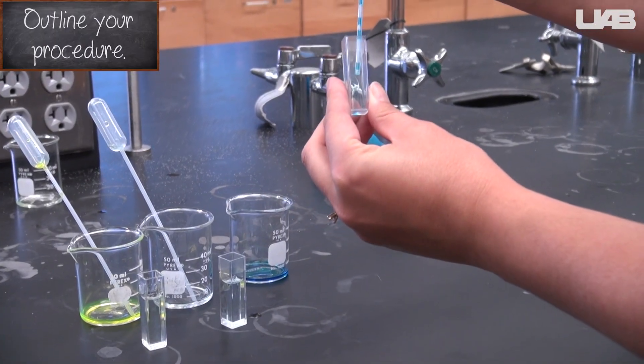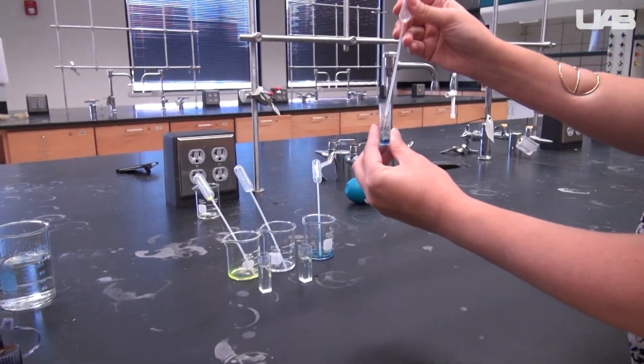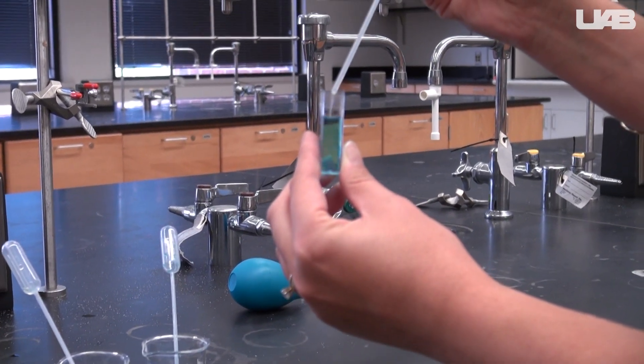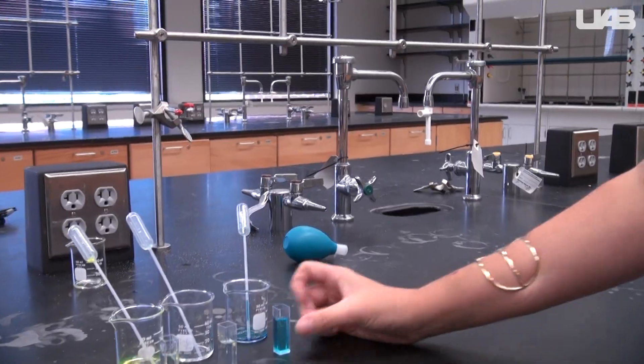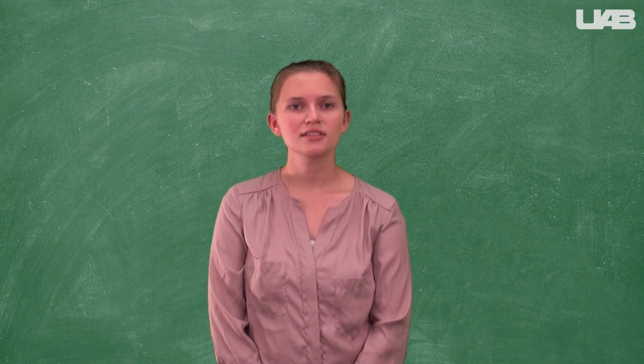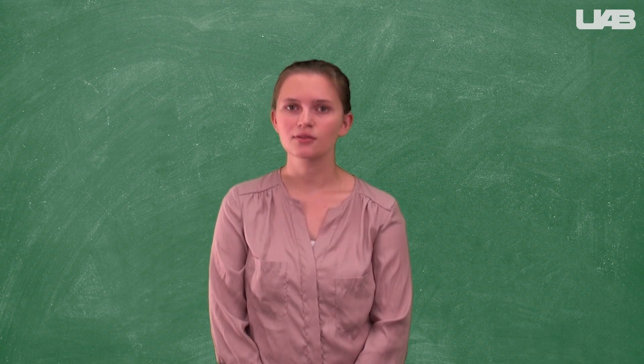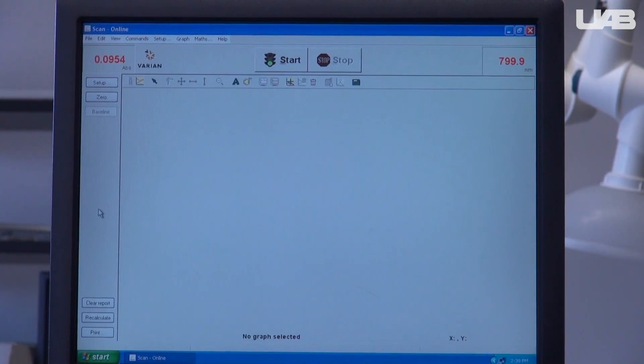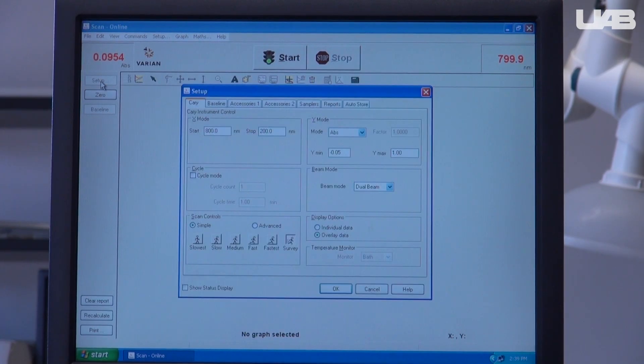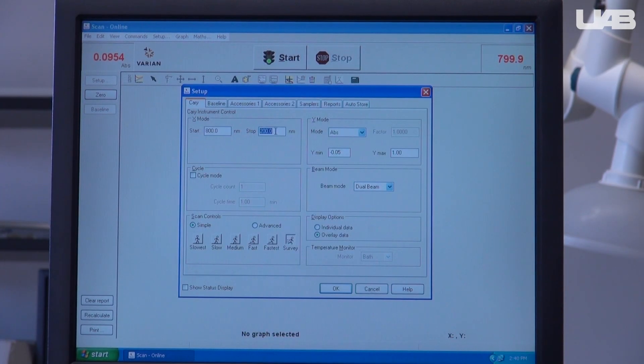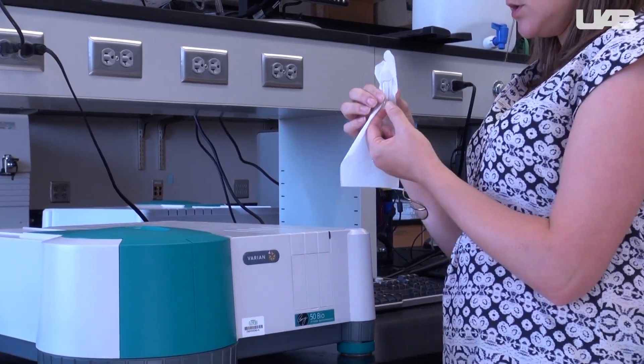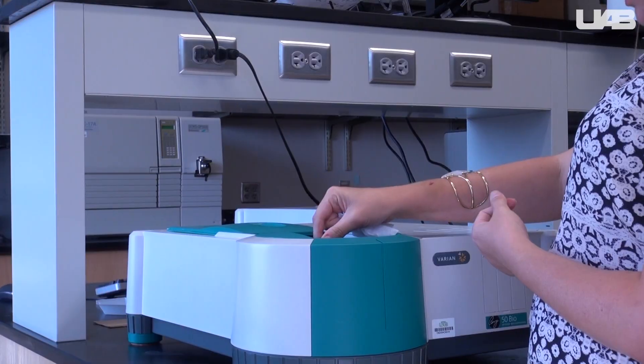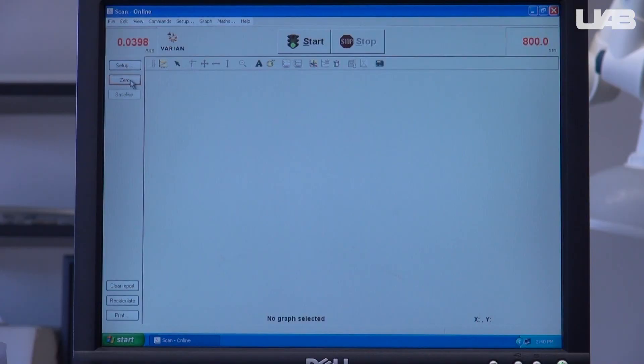Once you have collected each fraction, take a small portion from each and place it in a separate cuvette. Dilute it up to the mark with deionized water. Use the spectrophotometer to collect a UV visible spectrum from 800 to 200 nanometers. You will take the cuvettes with the colored solution along with the blank, a cuvette filled with deionized water. Open the scan program and select setup. Make sure it is set to record from 800 to 200 nanometers. Hit OK. Take your blank cuvette and a Kimwipe and clean the two sides of the cuvette that the light will pass through. Place it in the spectrophotometer and close the lid. Press zero on the computer.